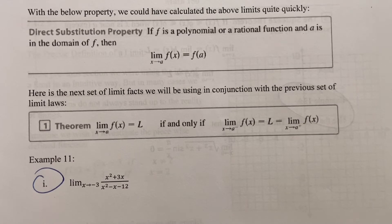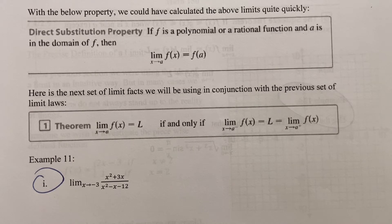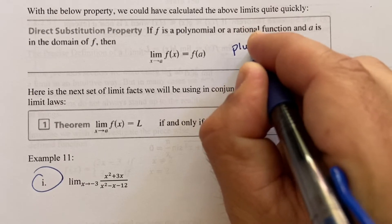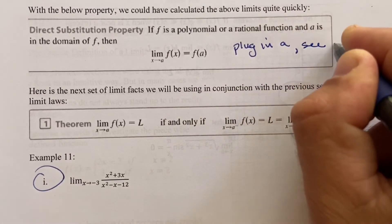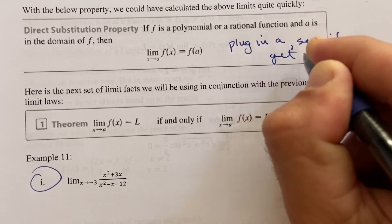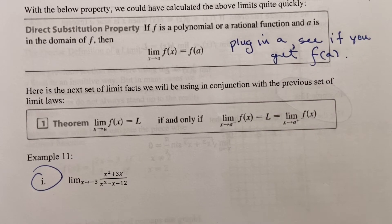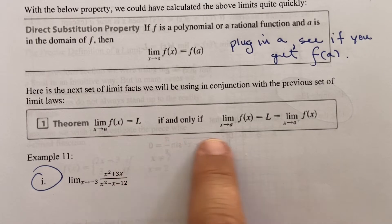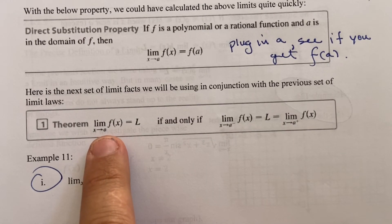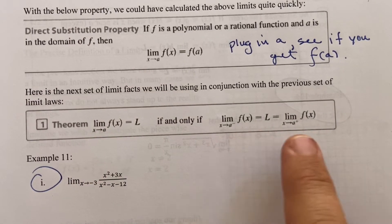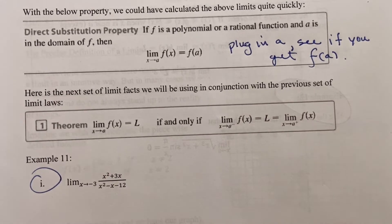What I've been alluding to is the direct substitution property, on page 16. In the case that you can just plug in a number and get a number out, you are done with the limit — and that's what the direct substitution property says, just a little more formally. The moral is: plug in a, see if you get f(a) — if you get a number out, you're done. Sometimes you'll get a mathematical error when you plug in a, and we'll see what happens in those cases. For two-sided limits to exist, the one-sided limits must exist and agree.